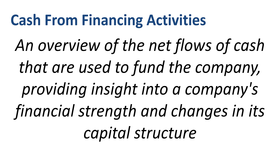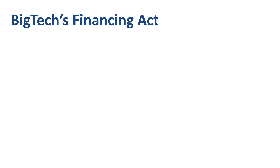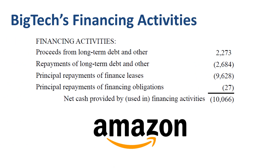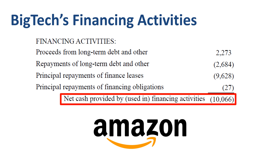Let's take a look at the cash from financing activities overview for one of the big tech companies, Amazon. The total cash used in financing activities is $10 billion, which is a net cash outflow, hence the brackets to indicate a negative number.